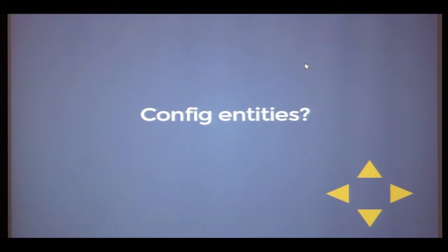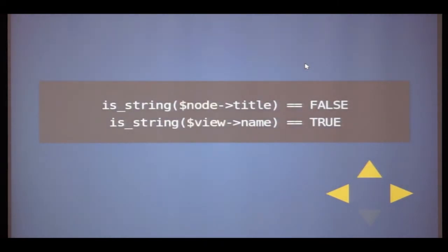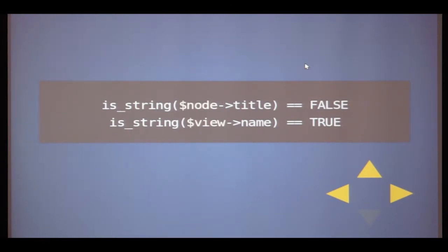Config entities don't have fields — that's the major difference between content entities and config entities right now. When you access a config entity, you get a plain PHP value. For example, accessing view->name gives you a plain string. But when you access node->title on a content entity, it gives you a field item list object. That structure — a list of field items, each field item, and the individual field item properties — is in place for all fields on content entities.